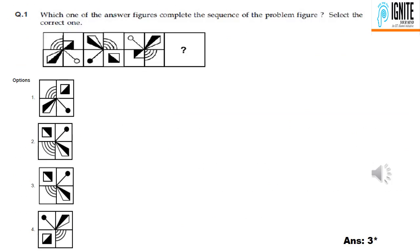Let's talk about the Aptitude section in this video. In the Aptitude section, Question No. 1 is a series topic. Which one of the answer figures completes the sequence of the problem figure? Select the correct one. We will find a figure in the field — options 1, 2, 3, 4 — and then we will find the answer.